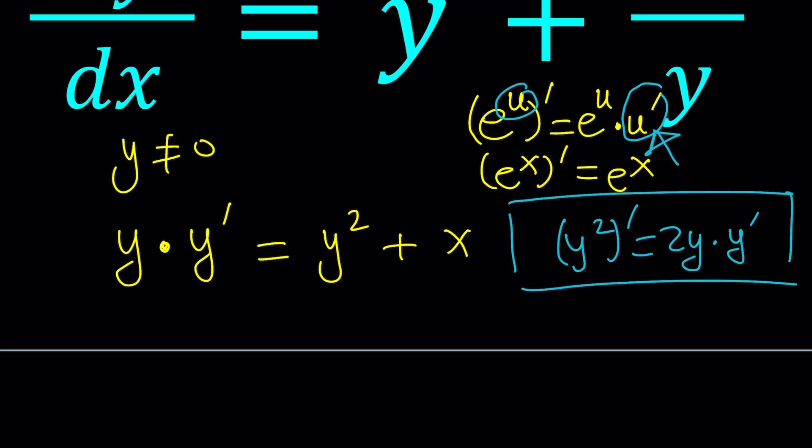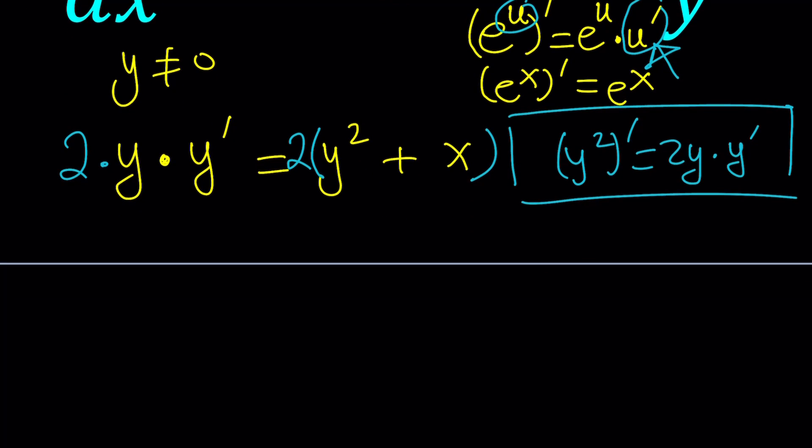Multiply by 2 and multiply by 2. From here, if you think about it, this is the derivative of y squared. And on the right-hand side, I just have 2y squared plus 2x. Awesome.